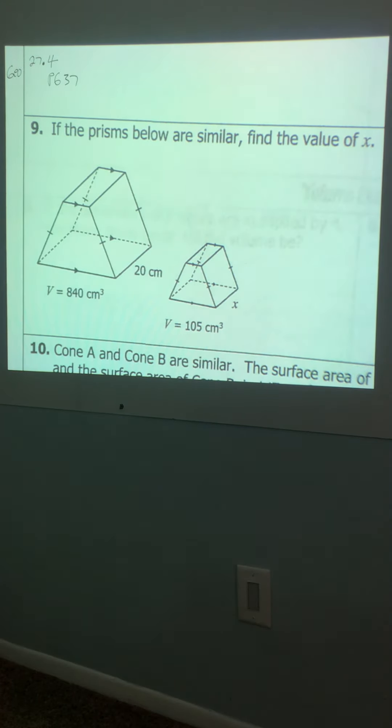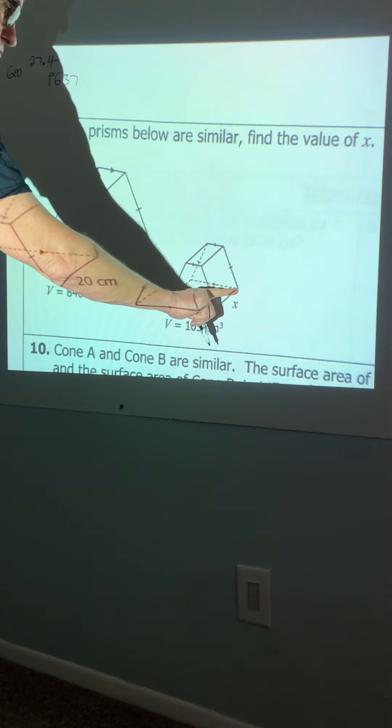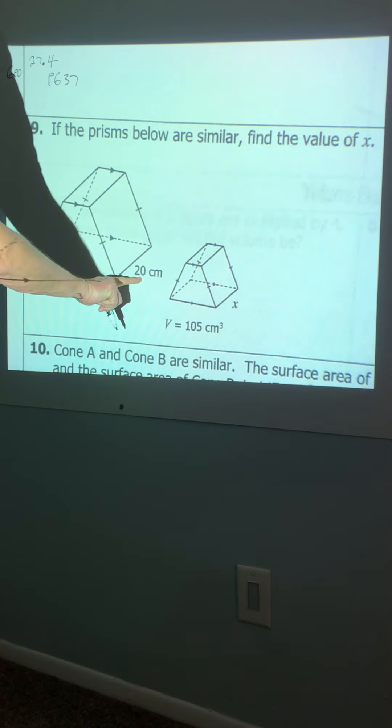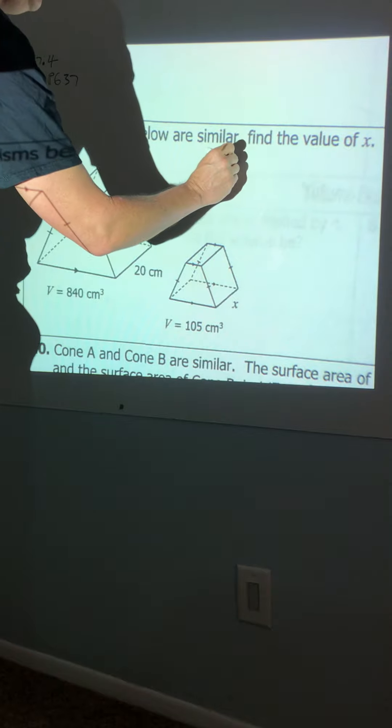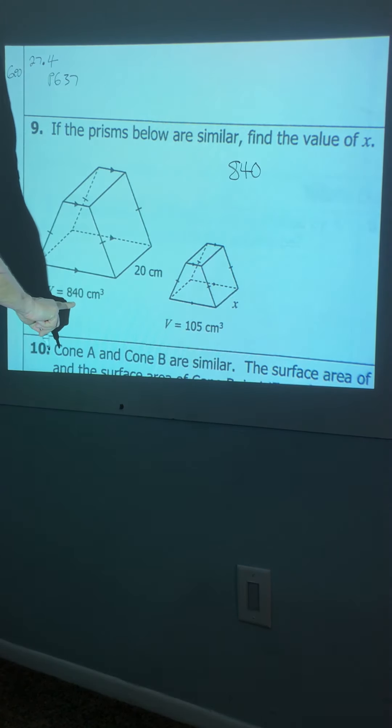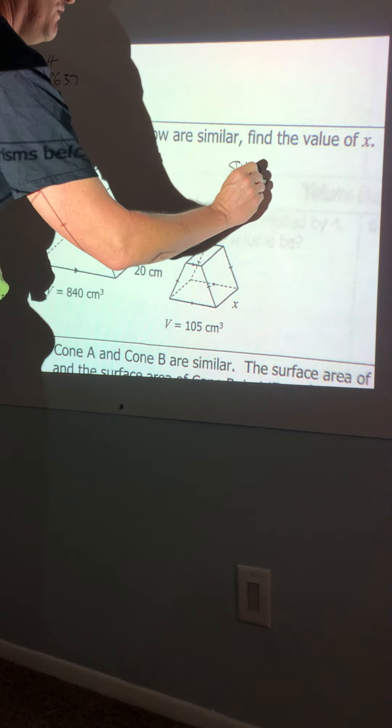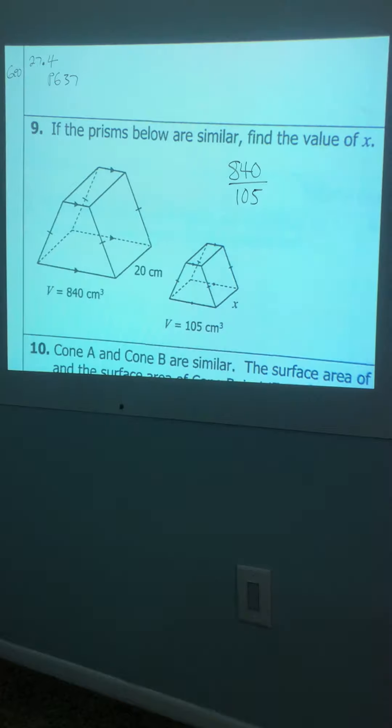So if the prisms below are similar, find the value of x. Okay, well look, x is a part. It's a linear measurement, that measurement right here. And it matches up with 20 because they said they were similar. They gave us volumes. So you're going to go 840 is the volume of the larger solid over 105.